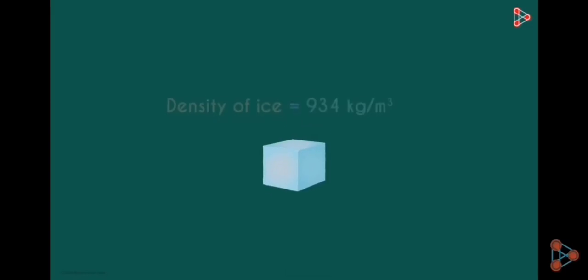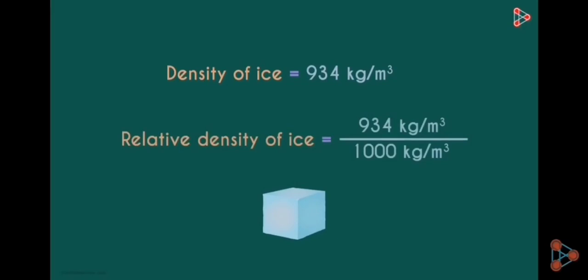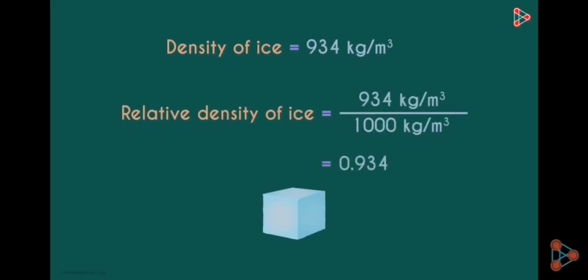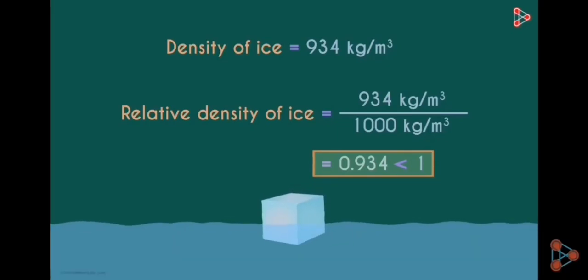If we take the example of ice, its density is approximately 934 kg per m³. So its relative density will be 0.934. As its relative density is less than 1, it will float in water.